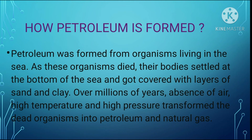How is petroleum formed? Petroleum was formed from living organisms that lived in the sea. When these organisms died, their bodies settled at the bottom of the sea and got covered with layers of sand and clay. Over millions of years, in the absence of air, under high temperature and high pressure, these dead organisms were transformed into petroleum and natural gas. Our petrol and diesel are obtained from this petroleum.